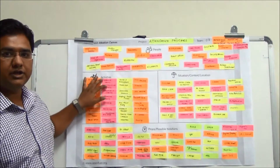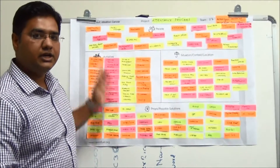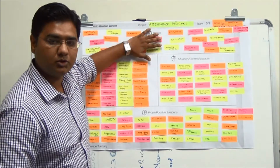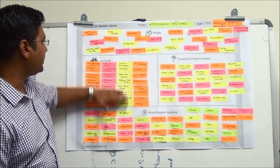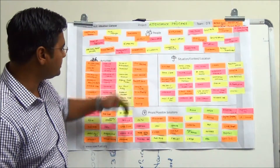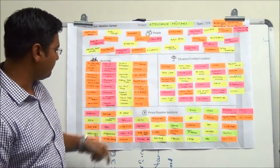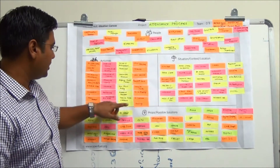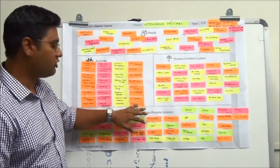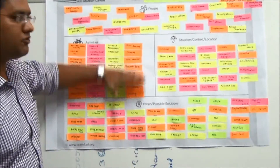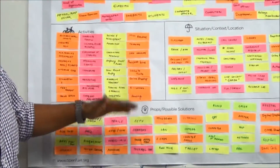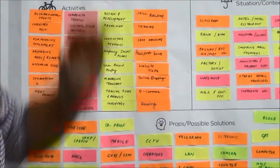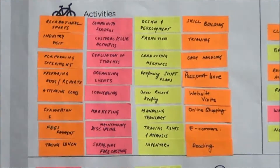The second portion is activities, which are basically related to the particular persons written here. Some of the activities include trainings, cash handling, fees payment for students, tracing records, and e-commerce reading. These are activities related to the particular people associated with this canvas.